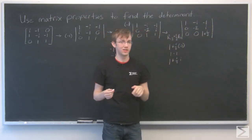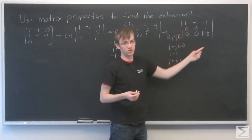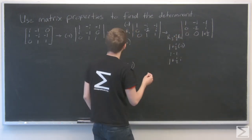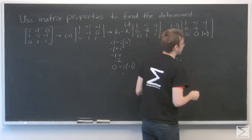So this matrix is now in upper triangular form. So we can just multiply across the main diagonal to find our determinant. And I have to remember, I got this negative one that I'm still carrying over. Very important.